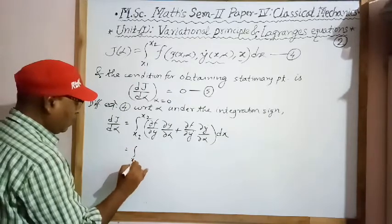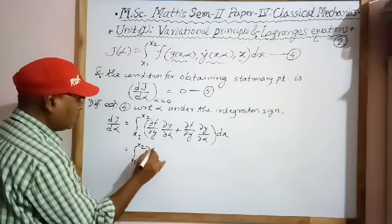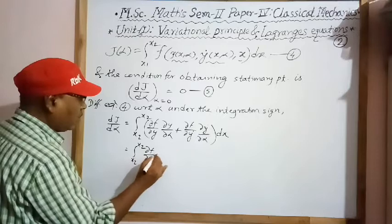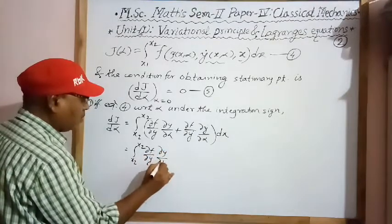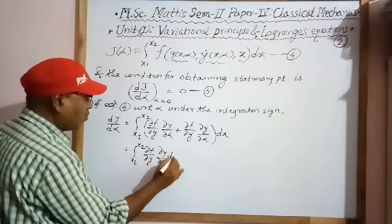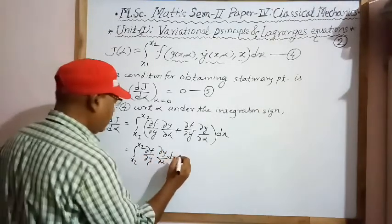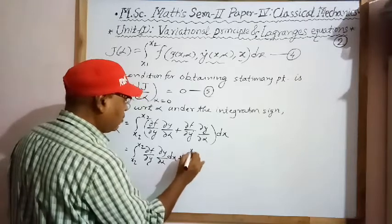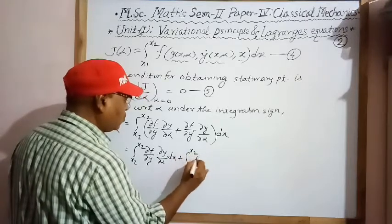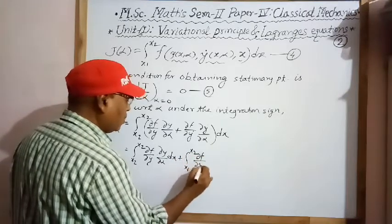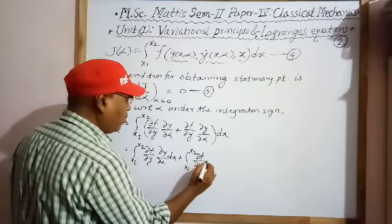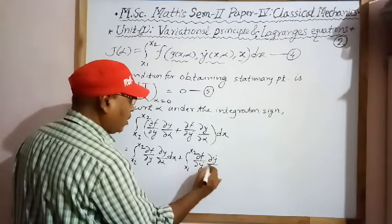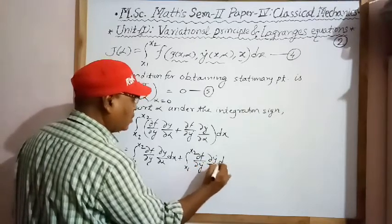This gives dJ/dα equal to the integration from x1 to x2 of (∂f/∂y)·(∂y/∂α) dx, plus the integration from x1 to x2 of (∂f/∂y-dot)·(∂y-dot/∂α) dx.